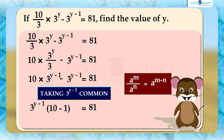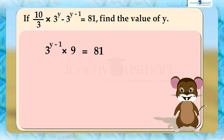That is, 3 raised to y minus 1, multiplied by 9, equals 81. Therefore, 3 raised to y minus 1 equals 81 by 9, which is equal to 9.